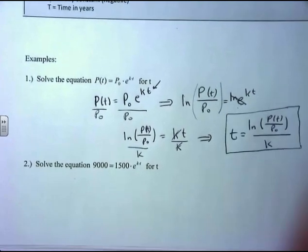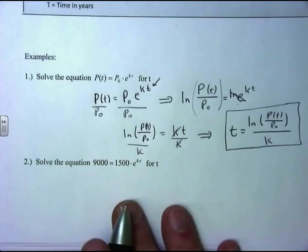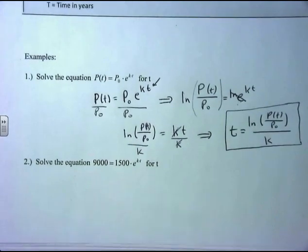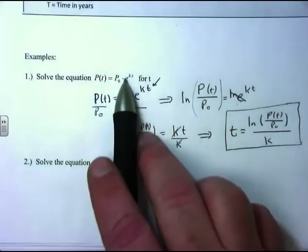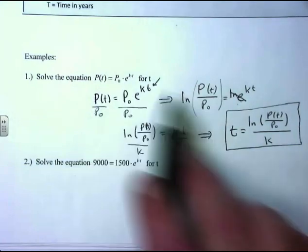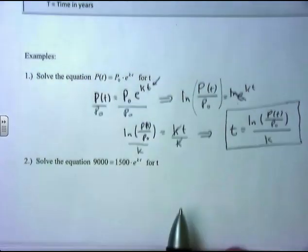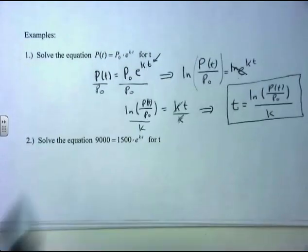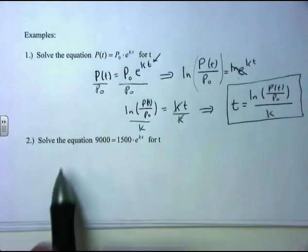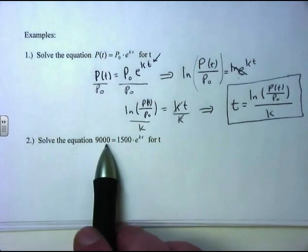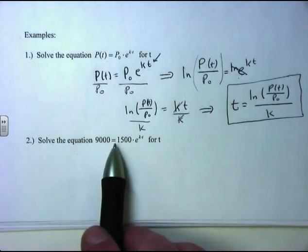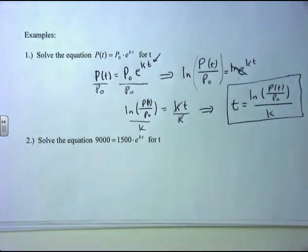Here's the solution for population growth or decay. Now some more practice: solve the equation 9,000 equals 1,500 times E to the KT. We still have some variables, but solve for T.